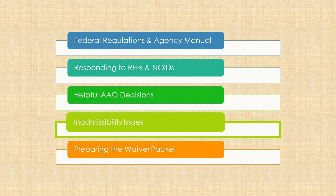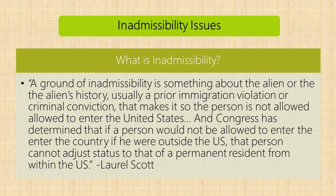Happy Friday afternoon, everyone. We're going to go into inadmissibility issues and preparing the waiver packet. A quick definition of inadmissibility: a ground of inadmissibility is something about the alien or the alien's history — usually a prior immigration violation or criminal conviction — that makes it so the person is not allowed to enter the United States. Congress has determined that if a person would not be allowed to enter the country if they were outside the U.S., that person cannot adjust status to that of a permanent resident from within the U.S.